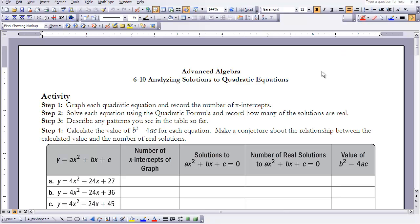We're going to start out this lesson with an activity. I want you first to graph each quadratic equation in the table found below and record the number of x-intercepts. The second thing I want you to do is solve each equation using the quadratic formula and record how many of the solutions are real. Describe any patterns you see in the table so far.